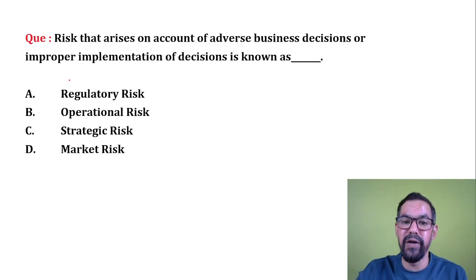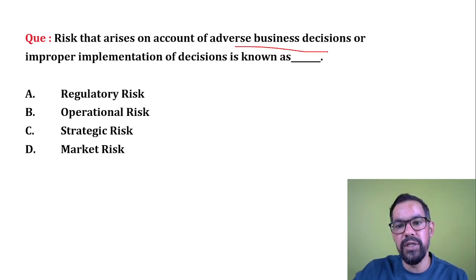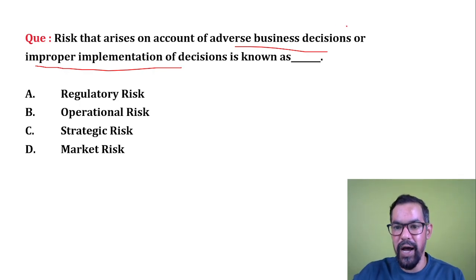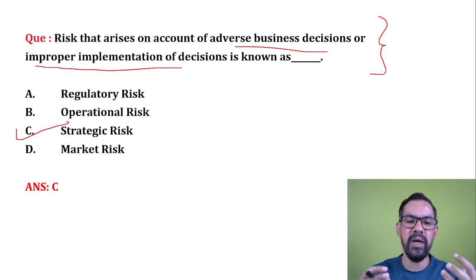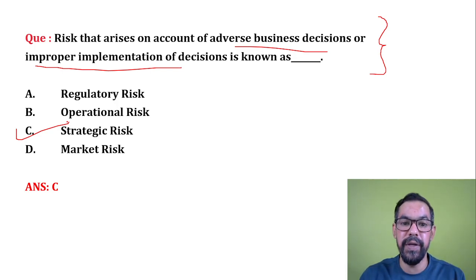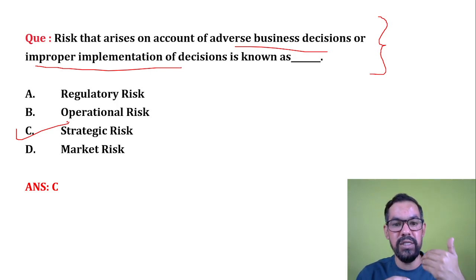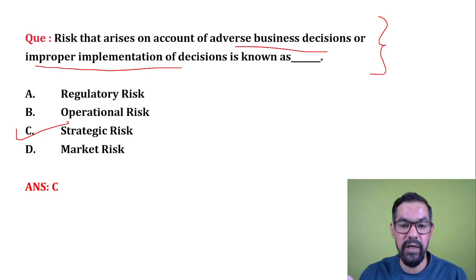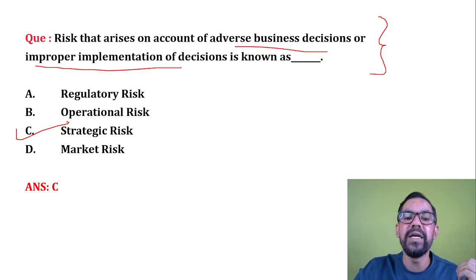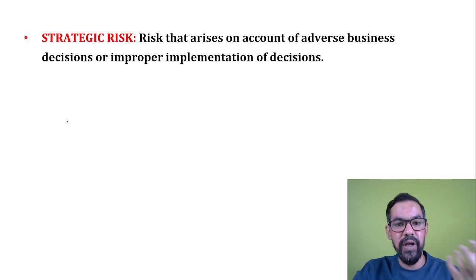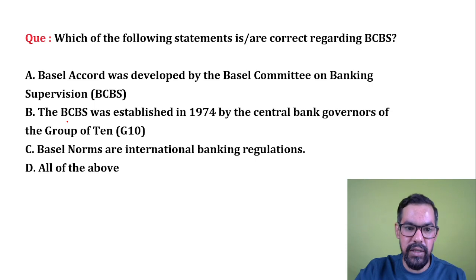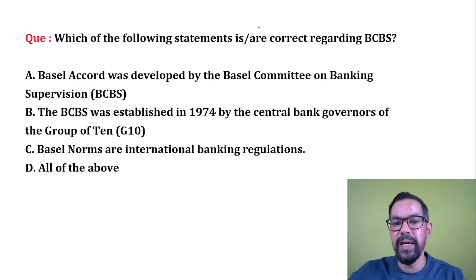Next question: risk that arises on account of adverse business decisions or improper implementation of decisions — the correct answer is strategic risk. When there are wrong strategies adopted by any company or management, and due to this wrong decision they face losses, that is strategic failure. They may have a good plan, but there is failure in implementation. Due to these losses or failure, it is generally known as strategic risk.